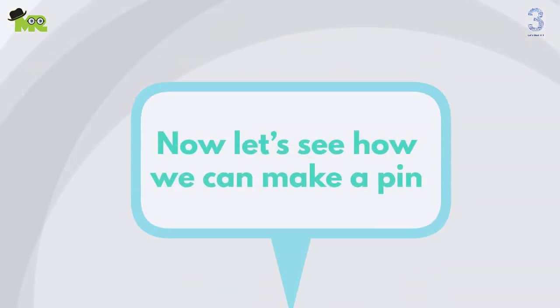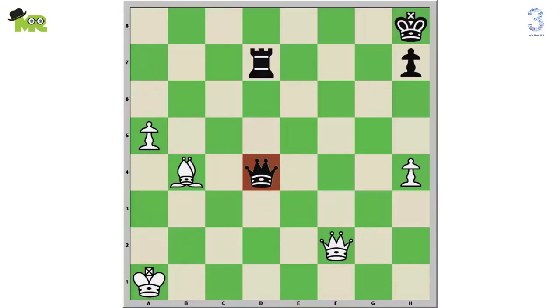Now let's see how we can make a pin. In this position, the d2 black queen is giving check to the a1 white king and also attacking the b4 white bishop and f2 white queen.